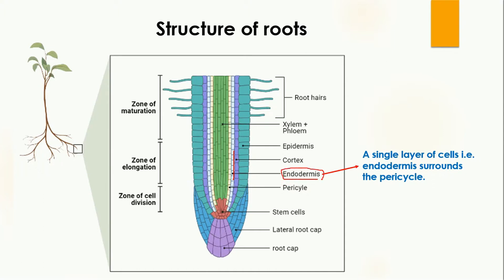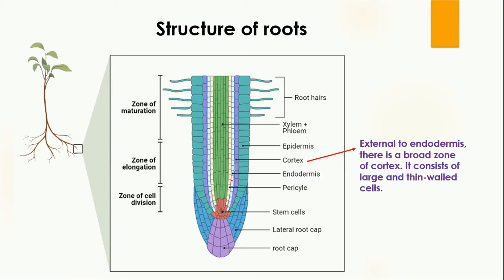Outside the pericycle is the endodermis — 'endo' means inside and 'dermis' means skin, so endodermis means inner skin. It is a single layer of cells that encircles the pericycle.